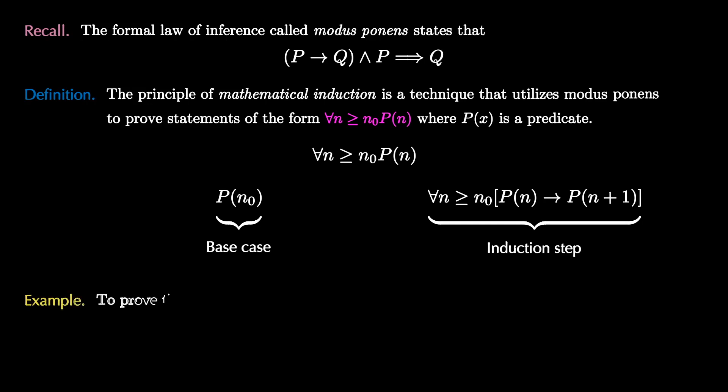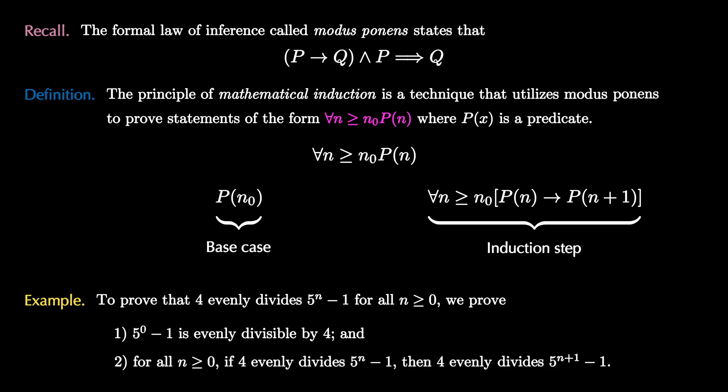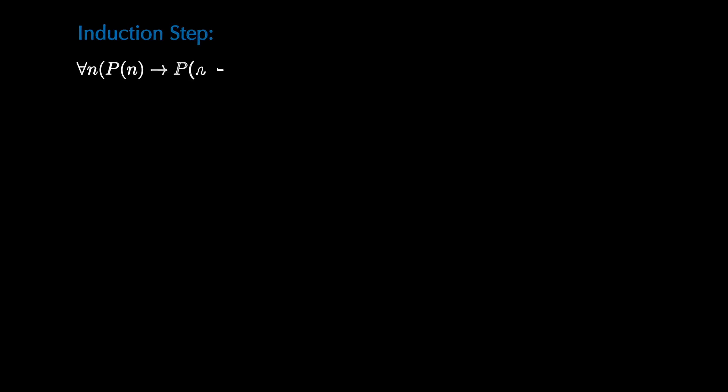For example, suppose we want to prove that 4 evenly divides 5 to the n minus 1 for all n greater than or equal to zero. To use induction, we first prove 5 to the zero minus 1 is evenly divisible by 4, and then we prove the universal statement that for all n greater than or equal to zero, if 4 evenly divides 5 to the n minus 1, then 4 divides the quantity 5 raised to the n plus 1 minus 1. Before we learn how to write proofs by induction, let's verify that induction works by seeing it as a waterfall of modus ponens.